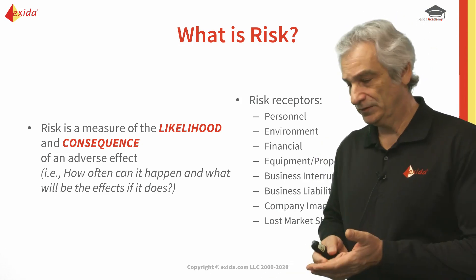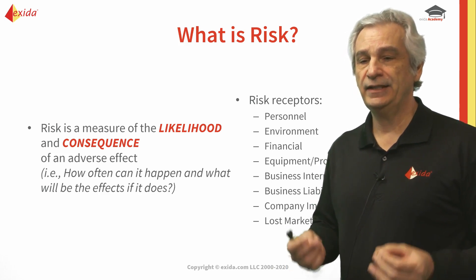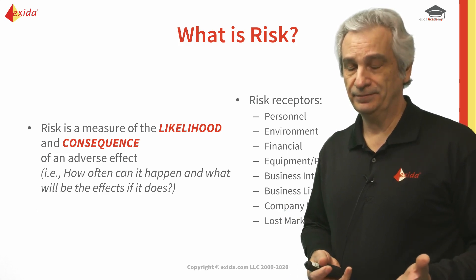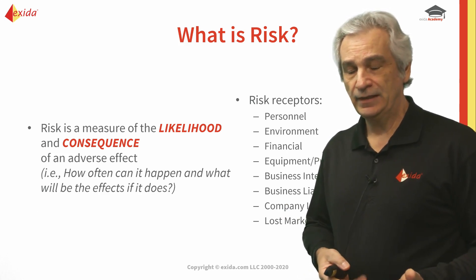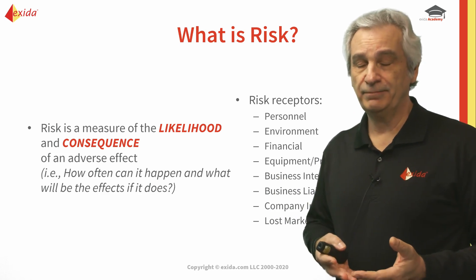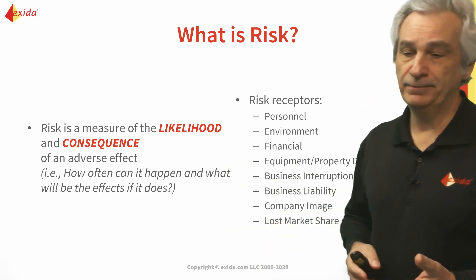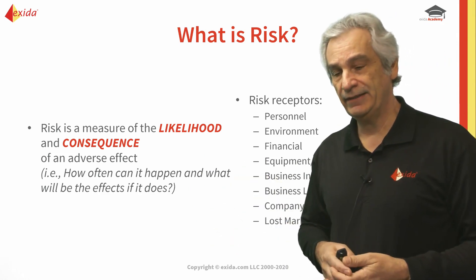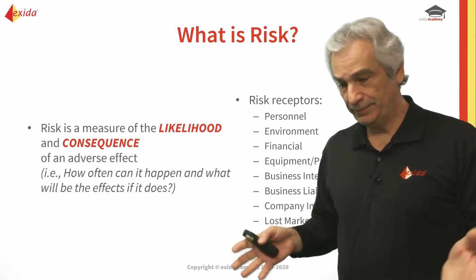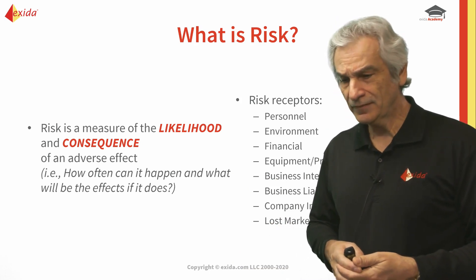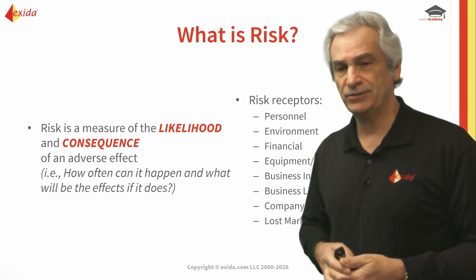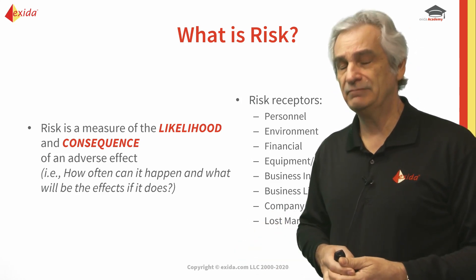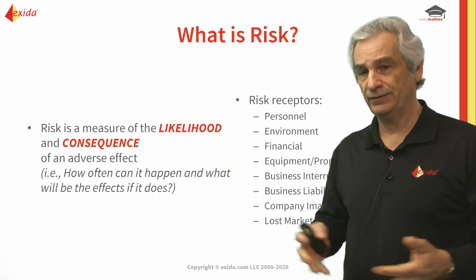When we talk about looking at risk, we're always looking at three risk receptors. The primary one, of course, is people — personnel risk. This can be the risk to our people in the plant, but also if there are people in the surrounding area. If the plant is in a fairly populated area, and depending on what the plant is manufacturing, if it's a highly toxic potential chemical, we could end up with a lot of people outside of the plant that are affected.